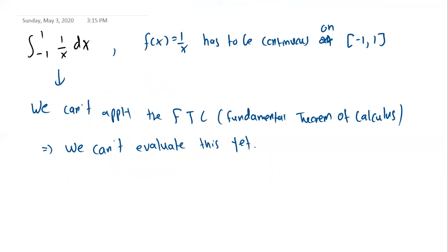For example, for the function 1 over x, if you want to find the definite integral from negative 1 to 1 of 1 over x dx, you can't use the fundamental theorem of calculus because 1 over x is not continuous on the interval negative 1 to 1. So here you can't use the fundamental theorem of calculus.